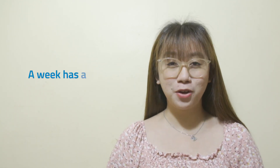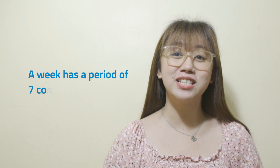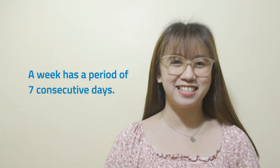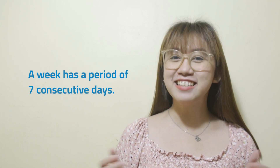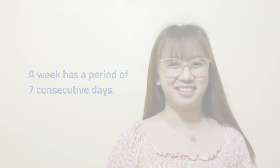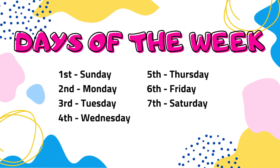A week has a period of seven consecutive days. Let's get to know the days of the week. The days of the week in order are Sunday, Monday, Tuesday, Wednesday, Thursday, Friday, and Saturday.